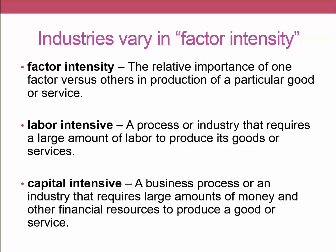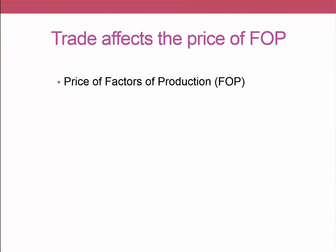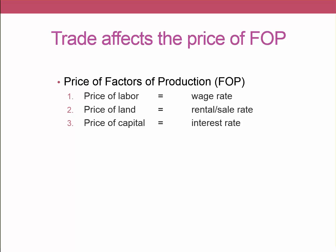At the most basic level, industries vary in their factor intensity — some use labor more, others capital more, others land more. Now what does this have to do with trade? Trade affects the price of the different factors of production. The price of labor is the wage rate — what you earn for working an hour. The price of land is the rental or sale rate for that land. The price of capital, in the most basic sense, is the interest rate — what you get in exchange for loaning out your money.